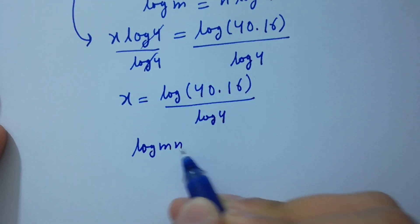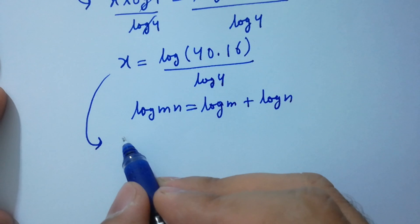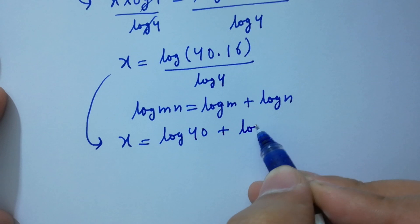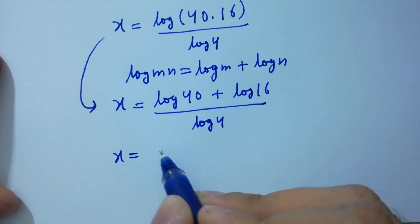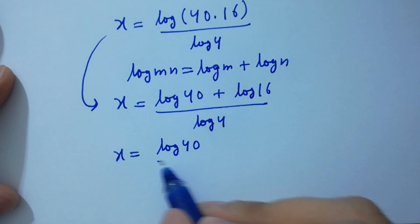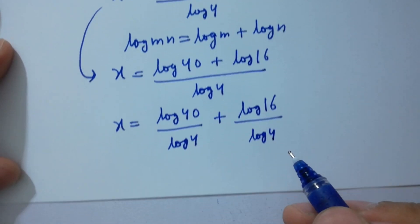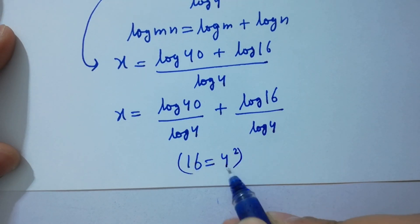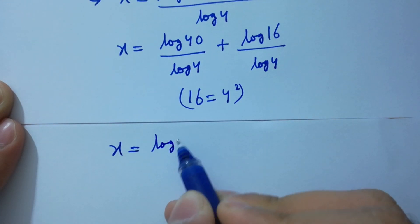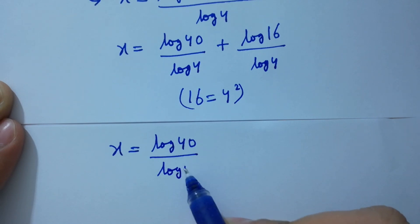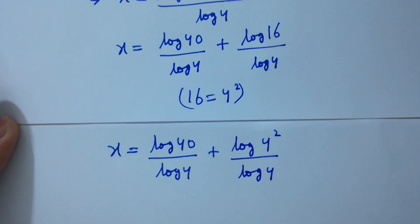As log(mn) equals log m plus log n, we expand log(40 × 16) over log 4 as log 40 over log 4 plus log 16 over log 4. Since 16 equals 4 squared, x equals log 40 over log 4 plus log(4²) over log 4.